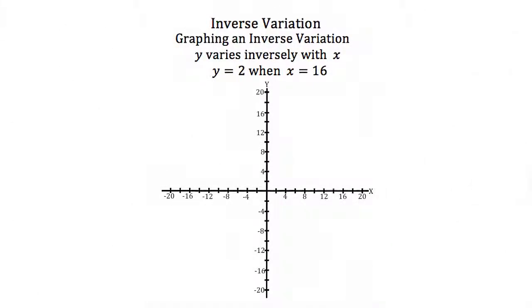Now let's see what the graph of an inverse variation looks like. We're told that y varies inversely with x, and when y equals 2, x equals 16. Plugging that in, we can find our k.